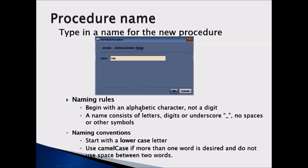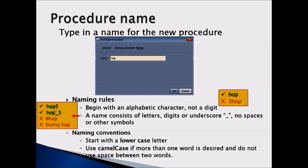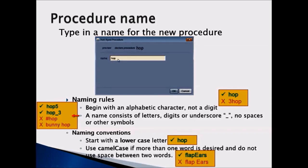When writing a procedure name, it should always begin with an alphabetic character, not a digit — so 'hop' is correct, but 'threehop' is not. A name consists of letters, digits, or underscore with no spaces or other symbols. So 'hop5' is valid, 'hop_three' is valid, but 'numberhop', 'bunny hop' (has a space), or 'hash hop' are not valid. Always start with a lowercase letter, and if we have two words, use camel case — first word lowercase, second word capitalized, no space between them.